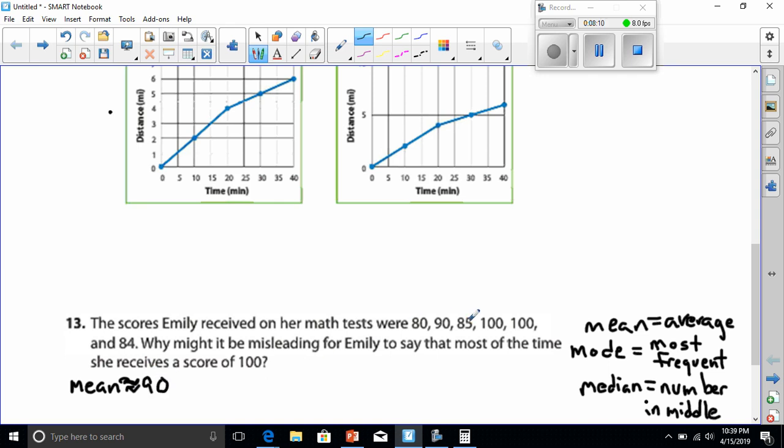Now, let's try to look for the mode. That's the one that's the most frequent. Well, out of all the numbers I see, only 100 is used twice. So the mode is the most frequent number. I'm going to have to say the mode is 100.